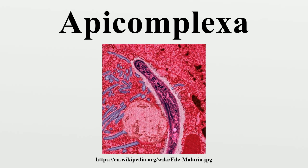The name of the taxon Apicomplexa derives from two Latin words, apex and complexus, and refers to a set of organelles in the sporozoite. The Apicomplexa comprised the bulk of what used to be called the Sporozoa, a group of parasitic protozoans in general without flagella, cilia, or pseudopods.